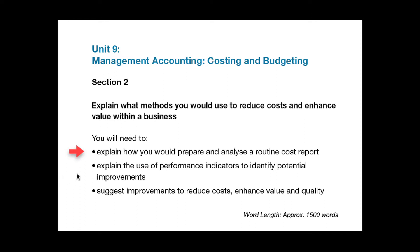Bullet point 2, often known as key performance indicators: you need to give some examples of how these are used to maintain standards, quality levels, and cost levels, and to generate improvements such as when lowering the allowable wastage rate or raising the targeted customer satisfaction level.